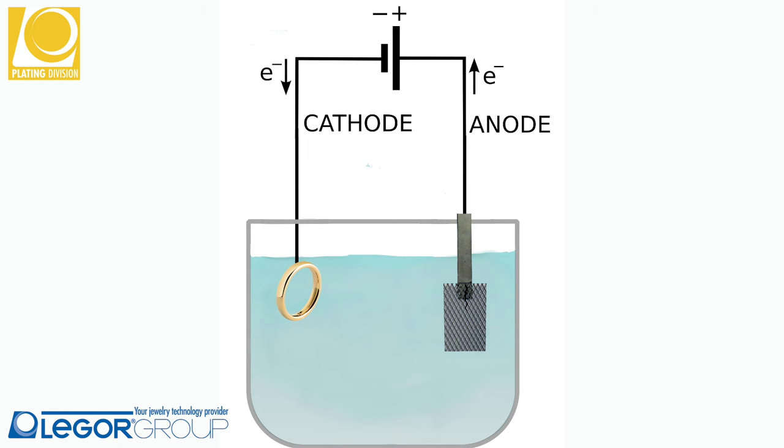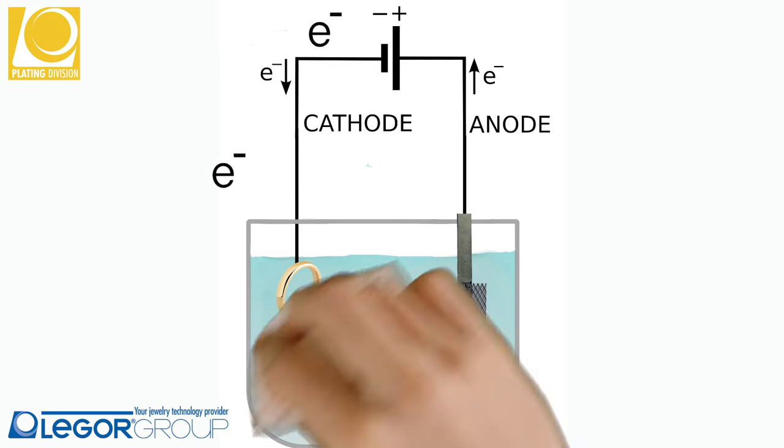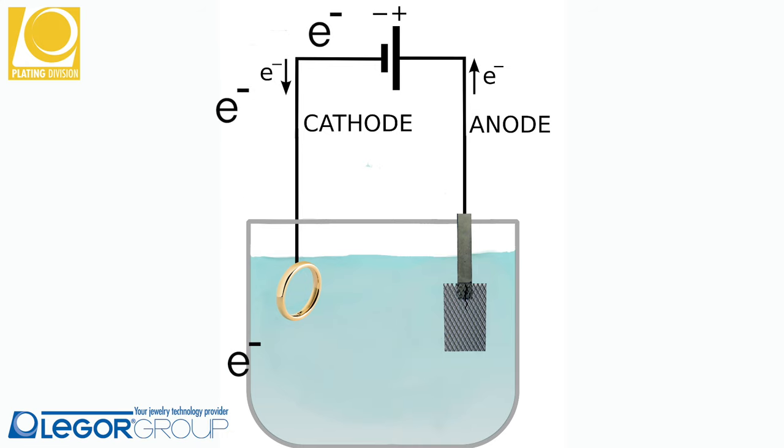Our source of covering metal this time will be the solution. Activating the electric current in the system, we have an oxidation of the solution in the area around the anode.